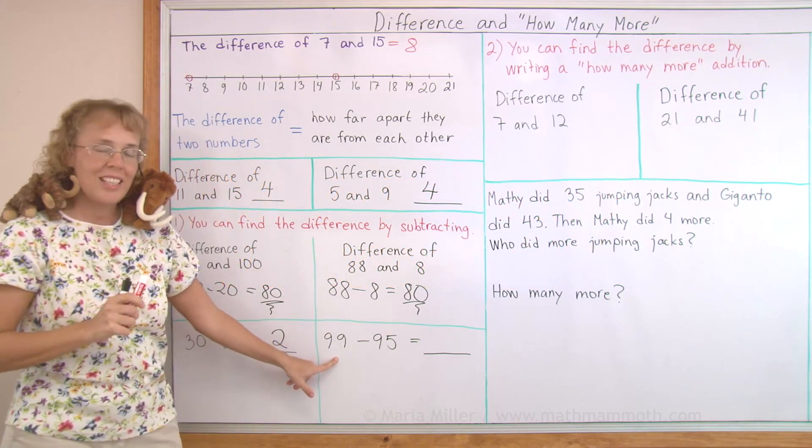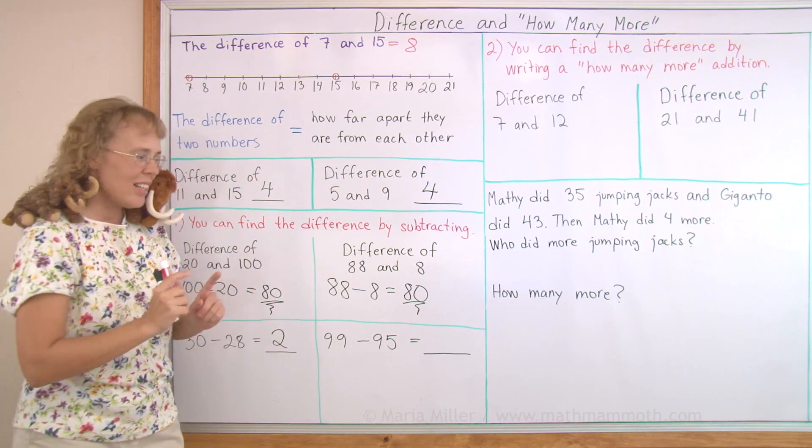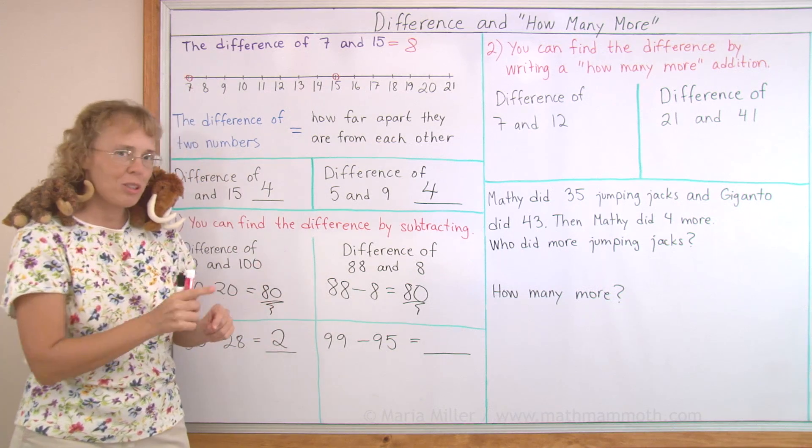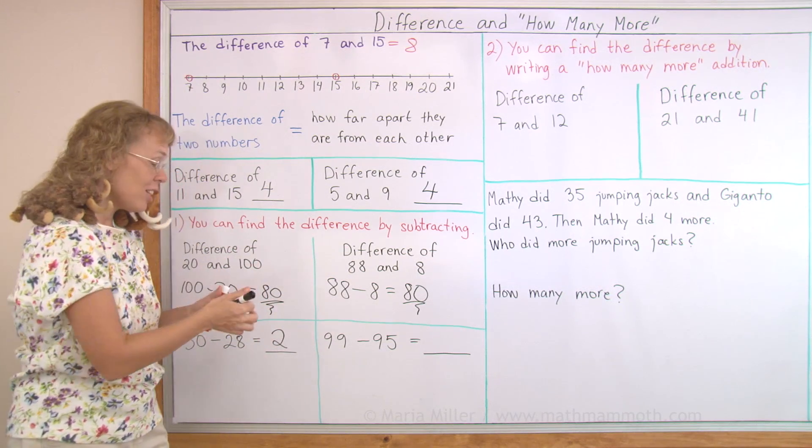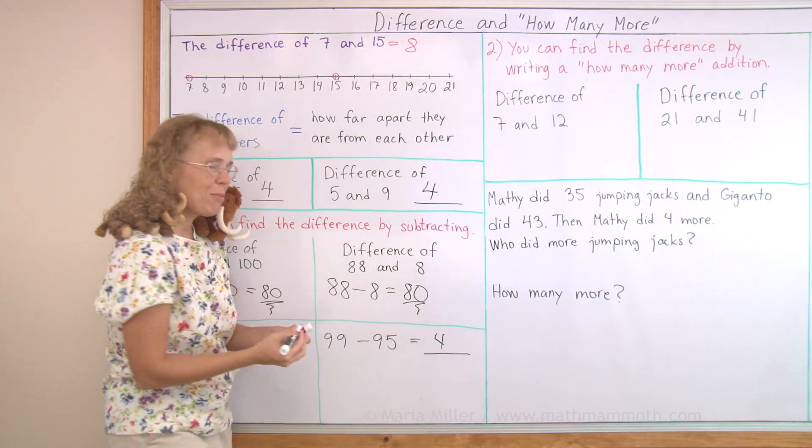Over here, 99 minus 95, again, these numbers are actually quite close to each other. How close are they to each other? Just four steps. So that's the answer to the subtraction.